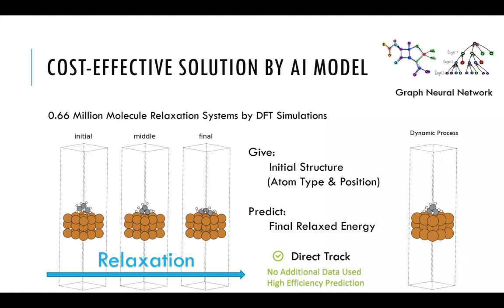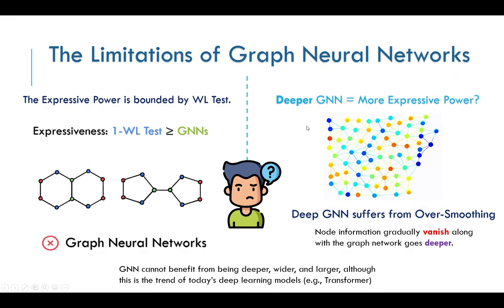Considering that direct final energy prediction is more efficient and more challenging, we participate in the direct track. Typically, graph neural networks are used to capture the geometric and physical knowledge in AI-based molecular simulation. However, the expressive power of graph neural network is limited. It could be proven that the expressive power of GNN is bounded by first-order WL test, which means that it cannot distinguish some important substructures.